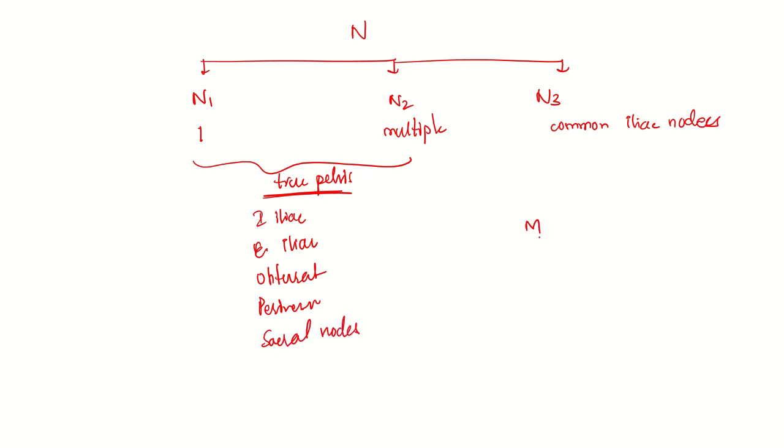Coming to M, M1 is presence of metastasis. M1 is divided into M1a and M1b. Any lymph nodes involved beyond common iliac are considered M1a. M1b is distant organ metastasis.